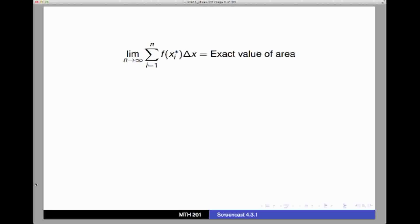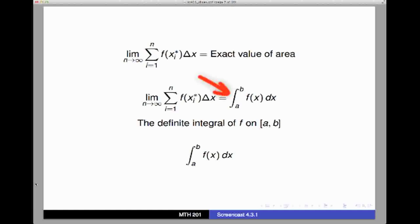This limit of a Riemann sum is what we call the definite integral of the function f on the interval from a to b. We denote it here with this symbol, which is supposed to be evocative of an elongated S for sum.